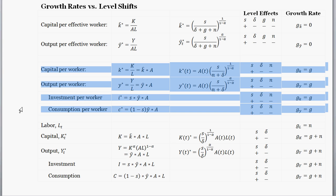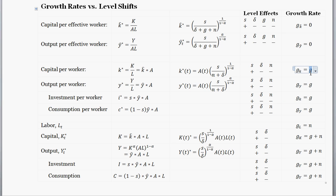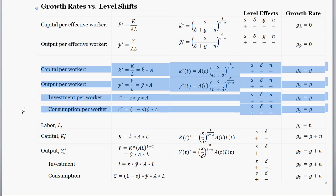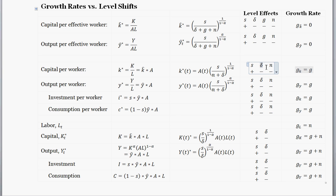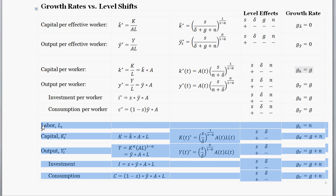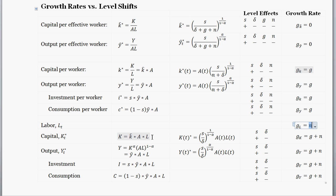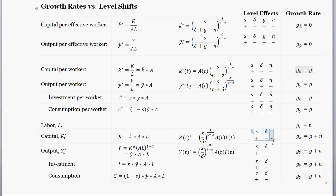For per worker or per capita levels, we know the growth rate is a function of the growth rate of technology G, and that hasn't changed. So the growth rate of these per worker levels hasn't changed. However, the depreciation rate does create a level effect: if depreciation increases, we expect a lower level for capital per worker, output per worker, investment, and consumption per worker. For aggregate levels, labor grows at rate N (the population growth rate), and all other aggregates — capital, output, investment, consumption — continue to grow at population growth plus technology growth. Those growth rates are unchanged, but depreciation does produce level effects that push those aggregate levels down.